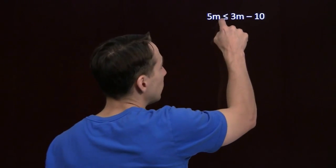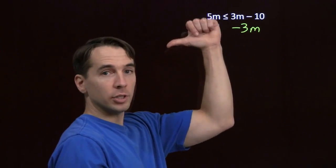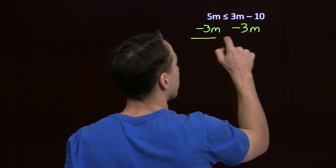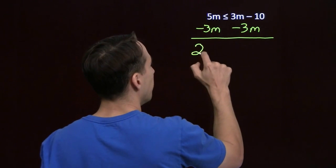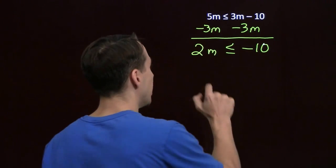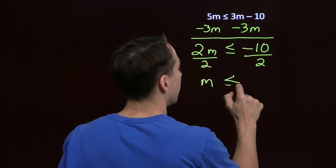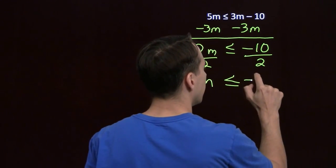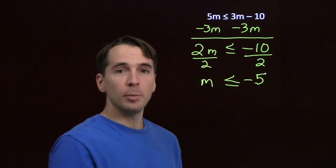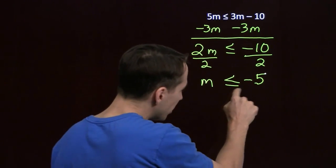Let's try another one. Right away we see a difference — this little line under the inequality sign, which tells us the two sides are allowed to be equal as well. We're going to isolate the variable by first combining all variable terms. We move the 3m to the left side by subtracting 3m from both sides. 5m minus 3m gives us 2m, less than or equal to negative 10. Now divide both sides by 2 — if I take half the smaller side, it's still less than or equal to half the larger side. Our solution is m is less than or equal to negative 5. The difference from last time is that negative 5 works as well.